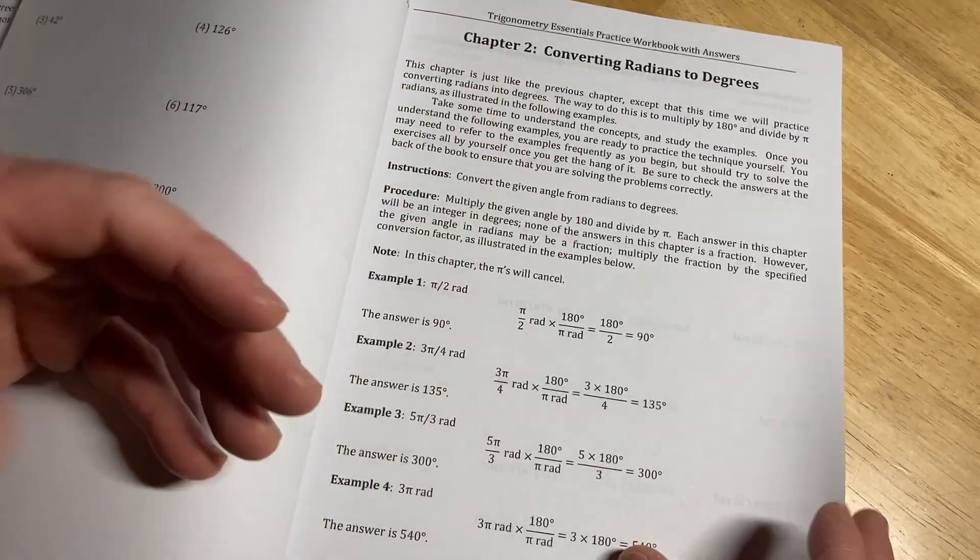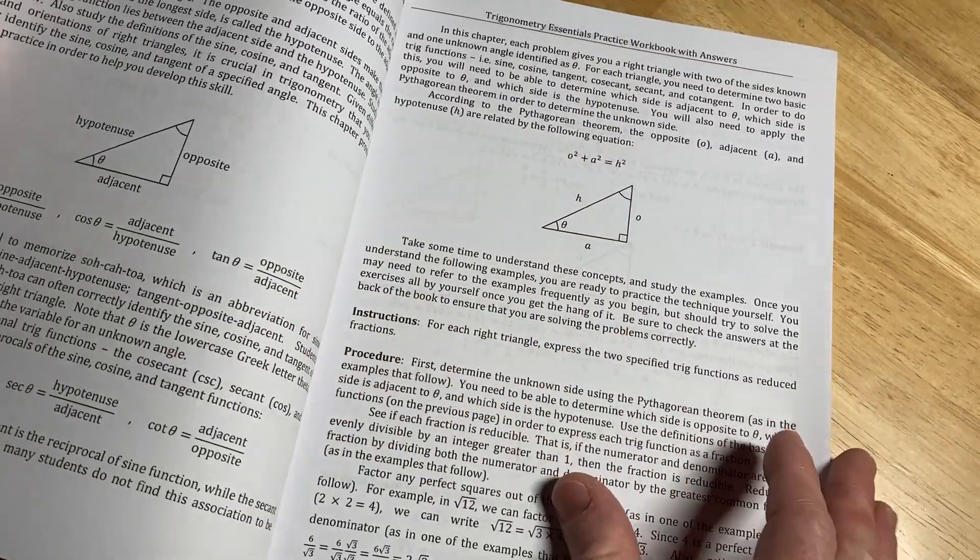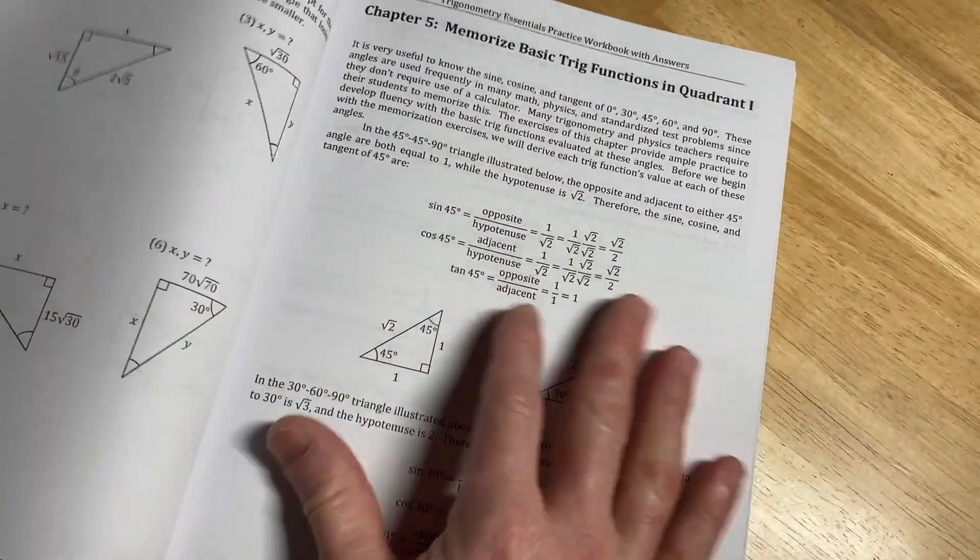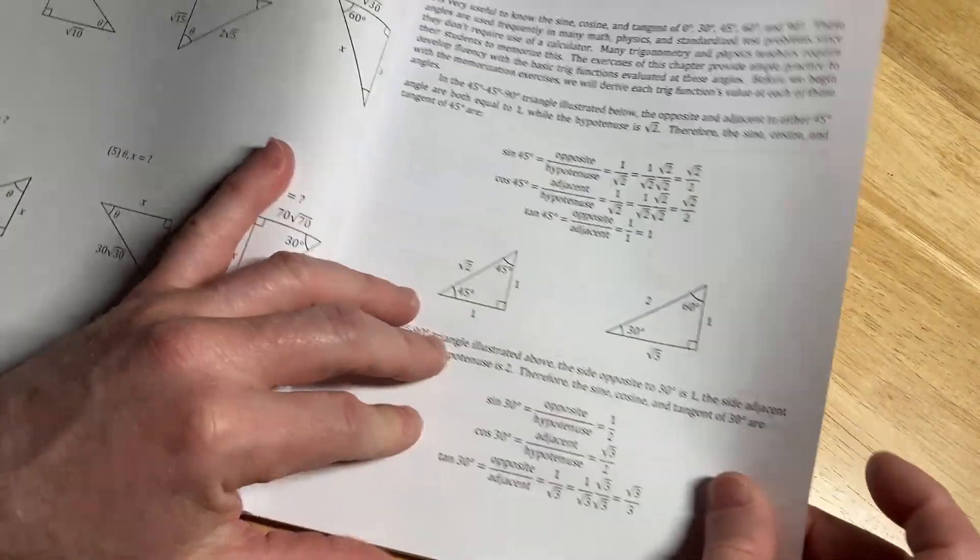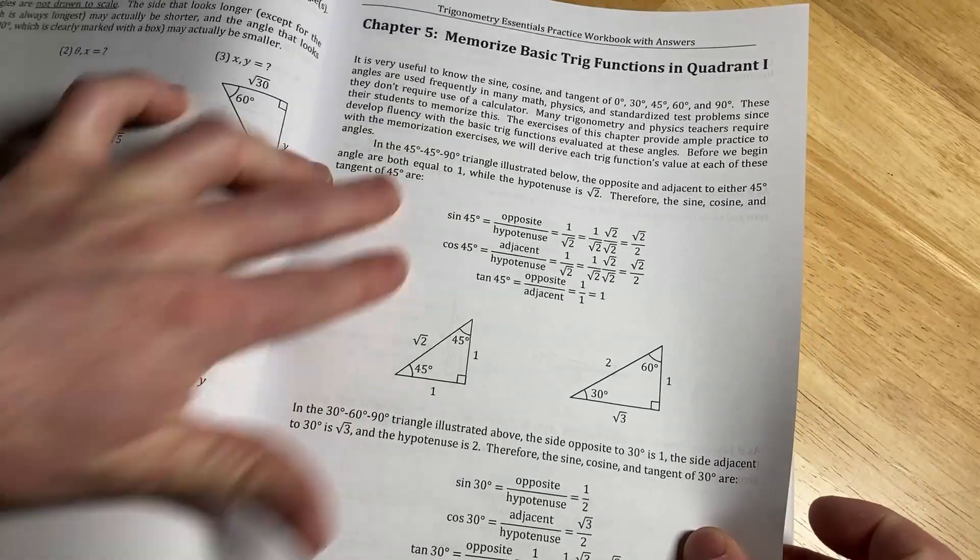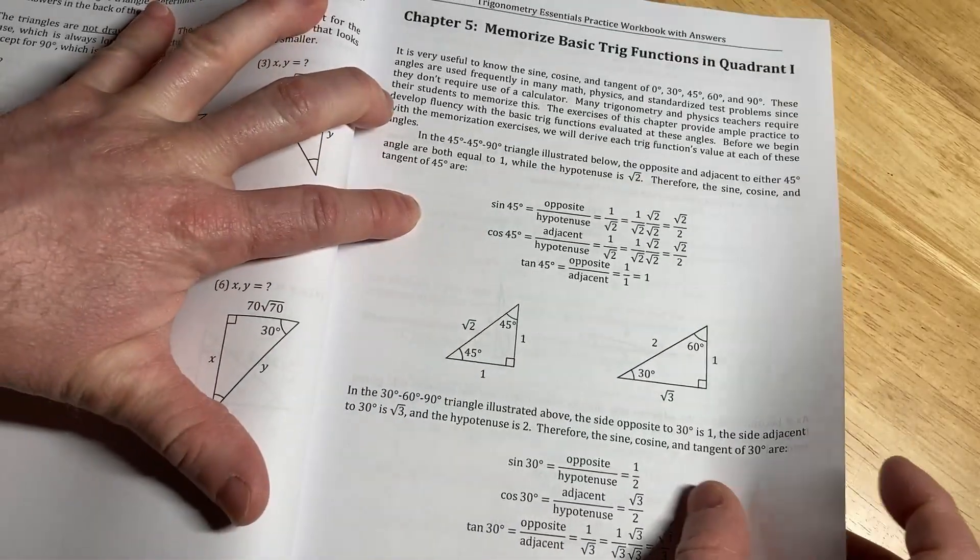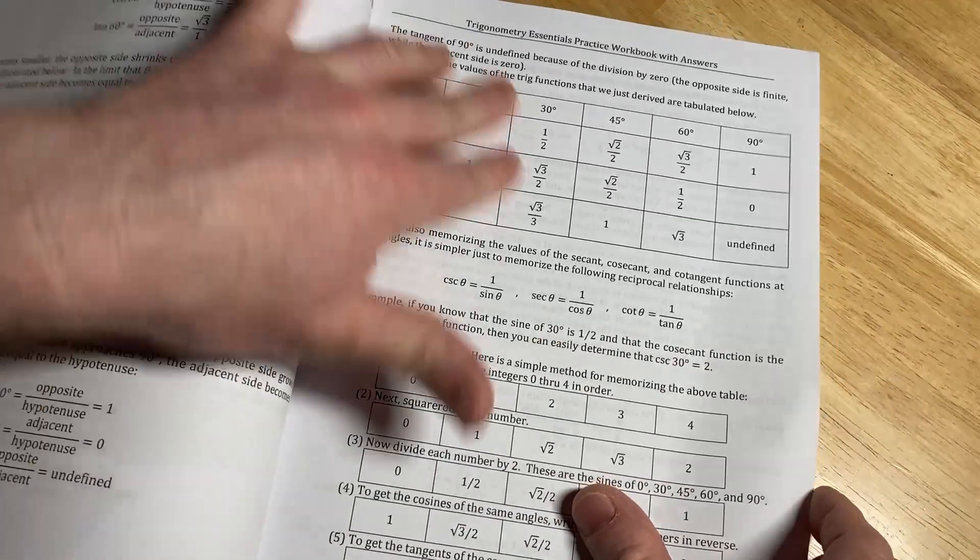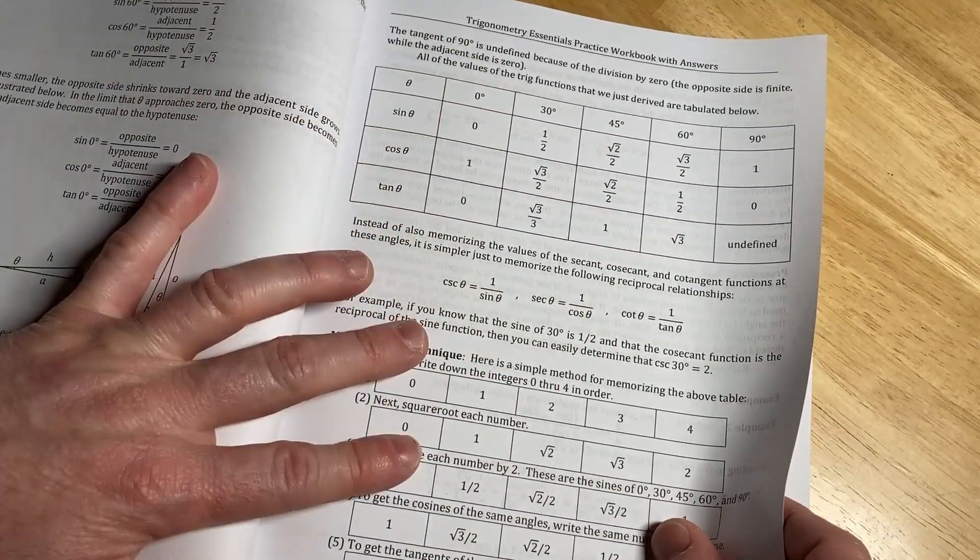Same thing here. Converting radians to degrees. Also very, very simple. Let's jump to that chapter I talked about. So here he talks about memorizing. Memorizing basic trig functions in quadrant one. Give some special triangles. You can use those. Or you can just commit them to memory, which I think is better. Just memorize them.